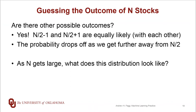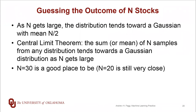As we start to make n larger and larger, what does this distribution look like? The answer is that this distribution actually tends towards a Gaussian with a mean of n/2. In fact, the central limit theorem says that the sum or mean of n samples of any distribution tends towards a Gaussian distribution as n gets large, and this is true no matter what the source distribution really is.